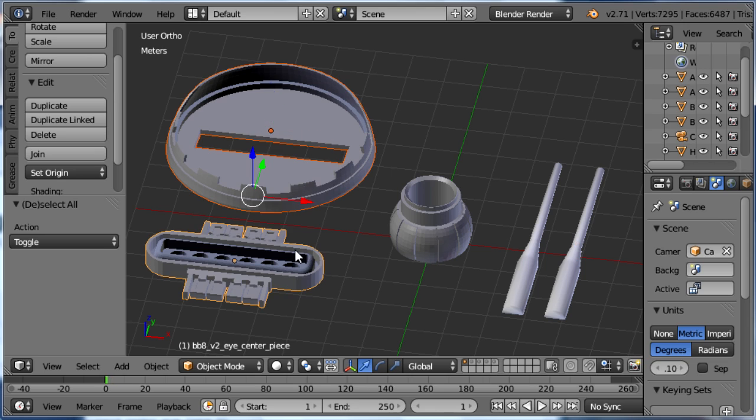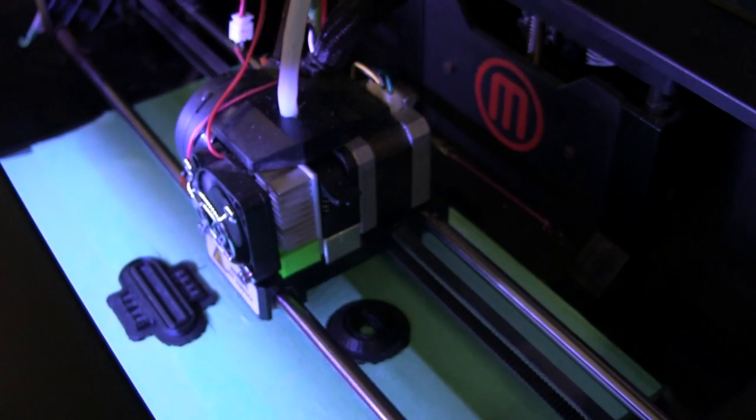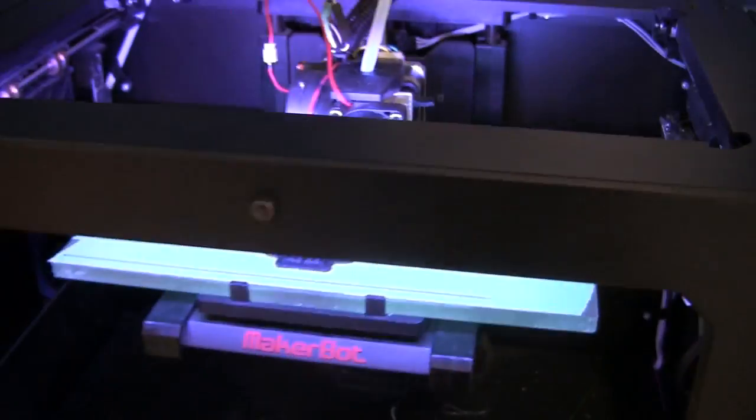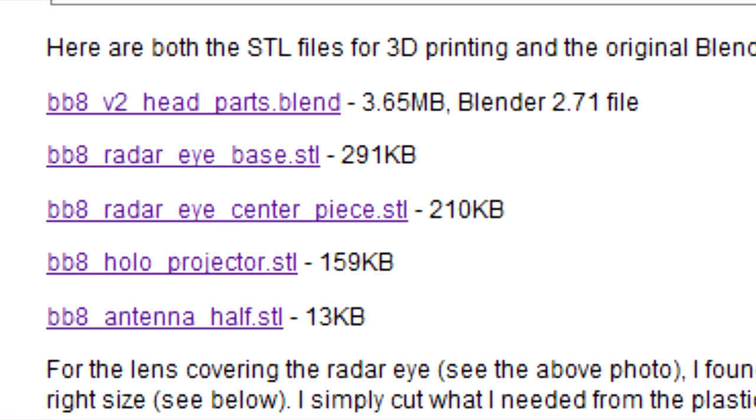I then started designing what's being called the radar eye, the holoprojector, and one of the antennas in Blender, a free 3D modeling and animation software. Then I printed them out at the University of Ottawa's makerspace. The files for doing this are also on my website, on the page about detailing BB-8.